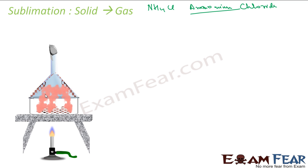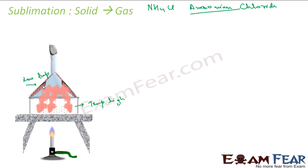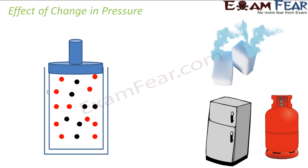On the heating side, the temperature is high, so the solid converts directly to gas. On the cooler side — the upper part of the funnel — the temperature is low, so the gas converts back to solid and gets deposited there. At no point does the ammonium chloride convert to a liquid state.